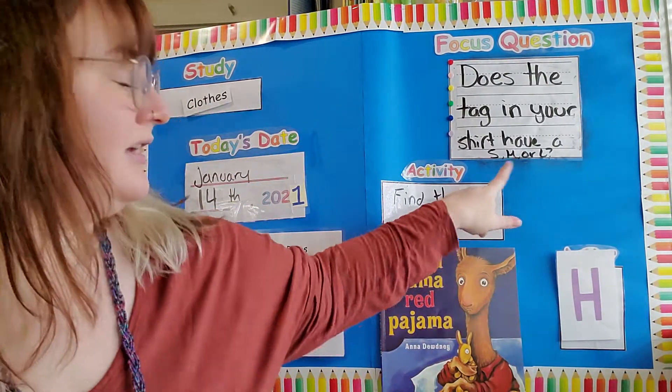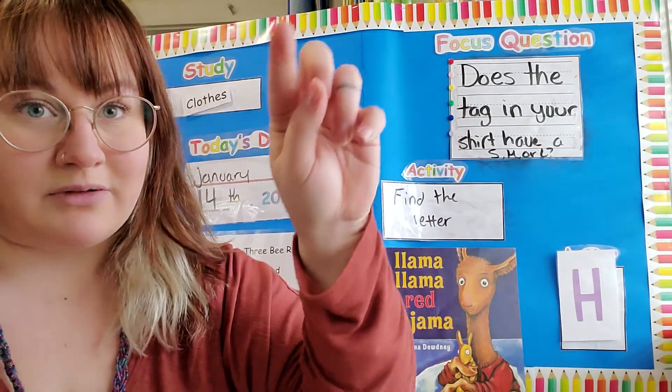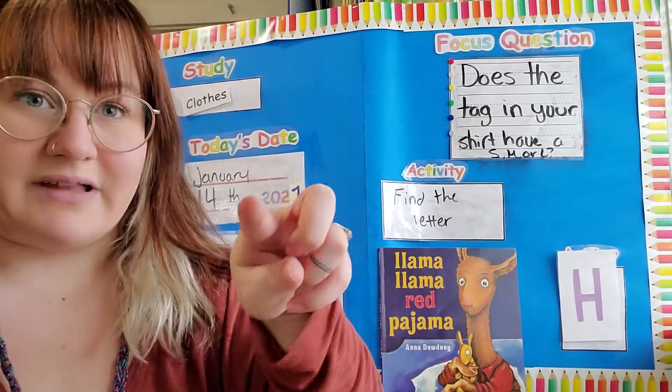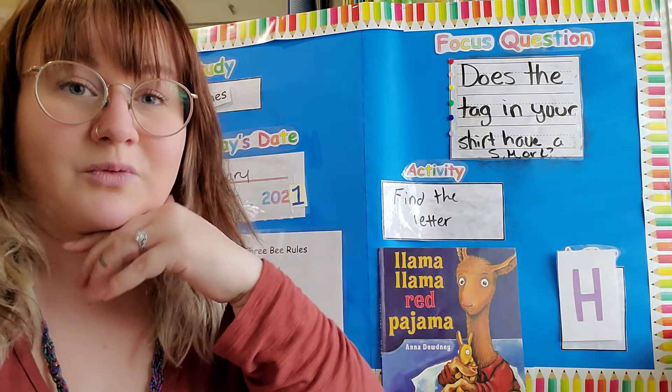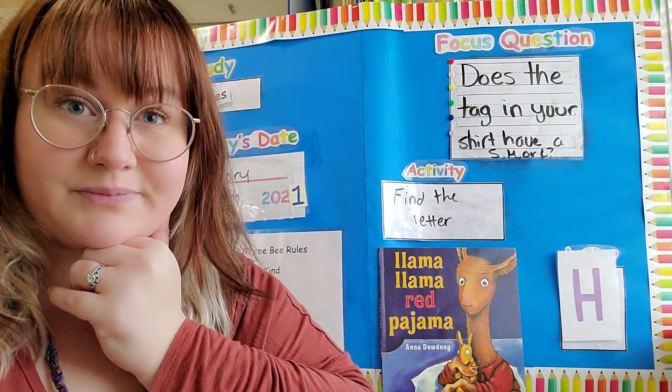Then does it have an S, which is a squiggle, an M, which is like two mountains, or an L, which is a line down and a line across? Which does yours have?